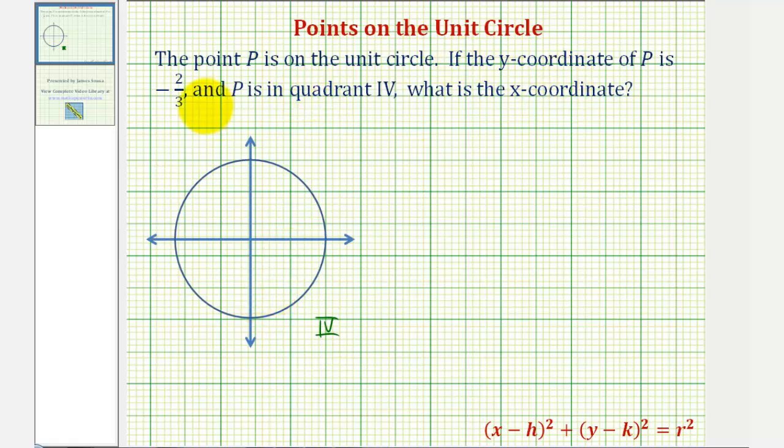We're given that the y-coordinate is negative two-thirds. So if this is one unit here, if we divide this into thirds, the point we're looking for would be this point here on the unit circle, where the x-coordinate is unknown and the y-coordinate is negative two-thirds.